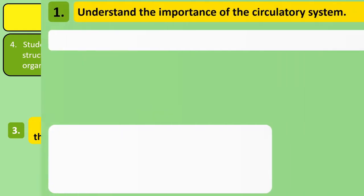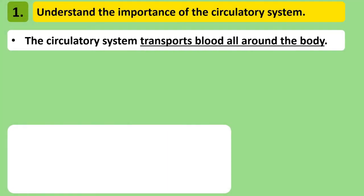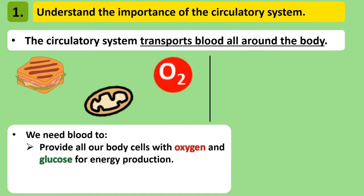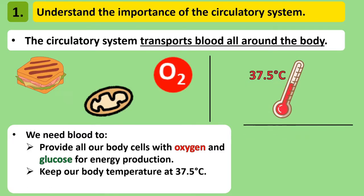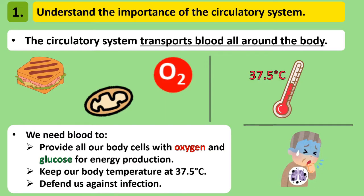Together, the heart, blood and blood vessels make up our circulatory system. It's important because it transports blood to each part of our body. The blood transports oxygen and glucose to each cell, allowing us to make energy. It shuttles waste like carbon dioxide back to the lungs for exhalation, and it also transports heat around the body, maintaining our body temperature at 37.5 degrees Celsius so that enzymes in all of our cells can work properly. The blood also has a large role to play in defending us from infection.